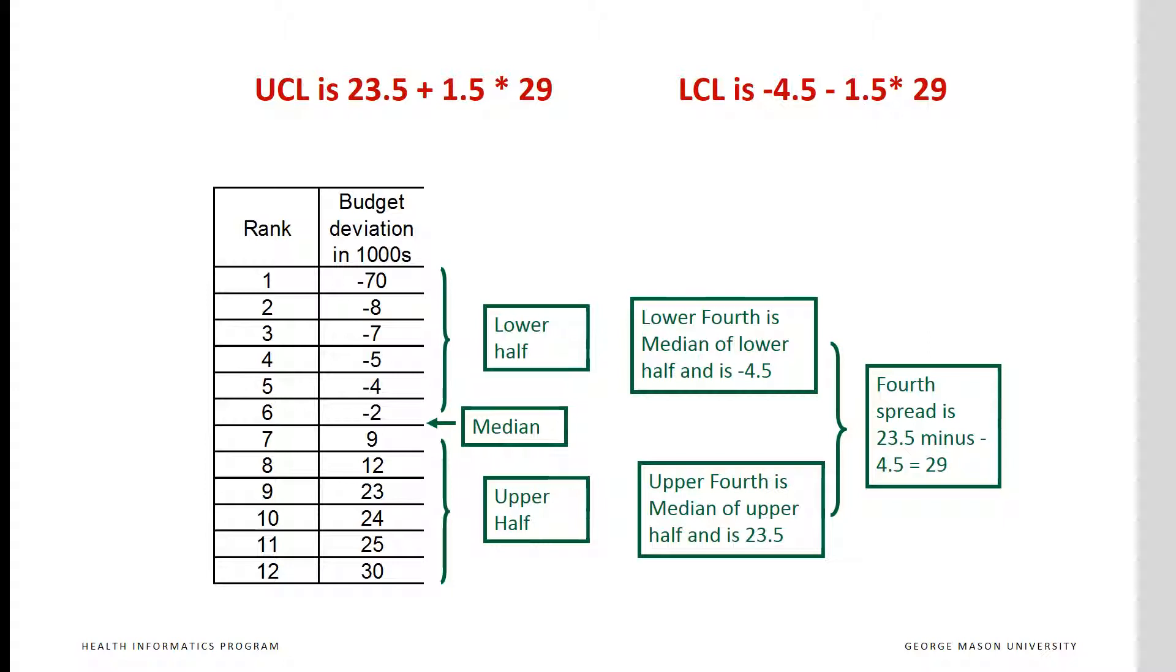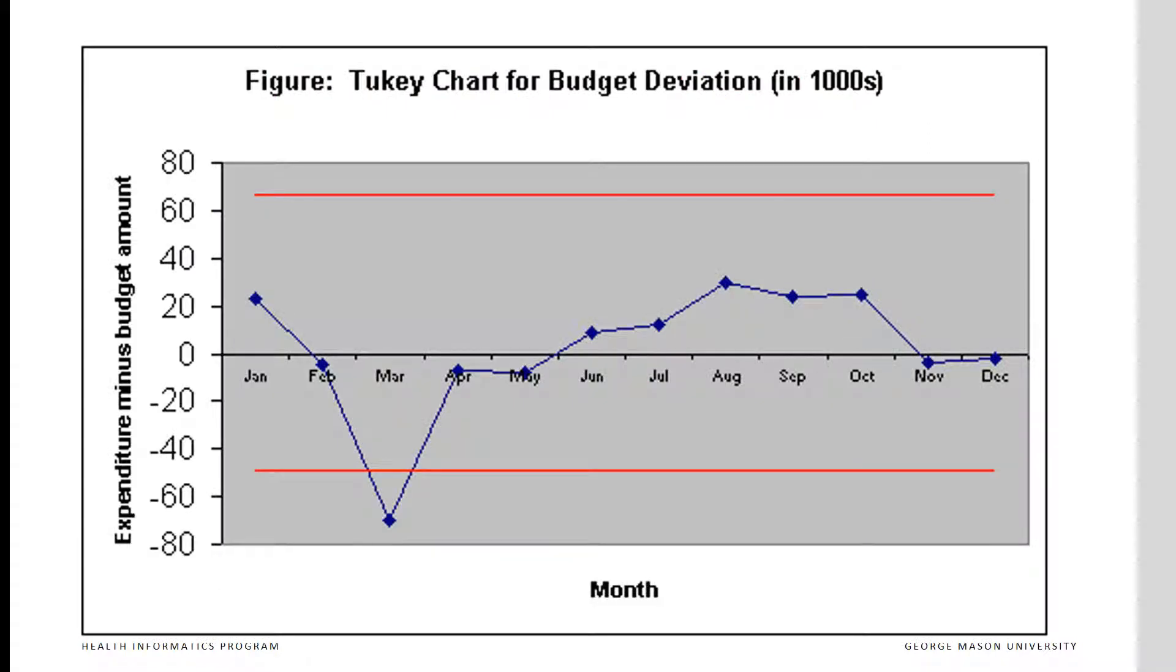The fourth spread is 29. Now we can calculate the upper and lower control limits. The chart shows that all months are within control limits except for March, where there was a significant deviation from the budgeted amount. We have to look at what was the cause of this significant deviation.